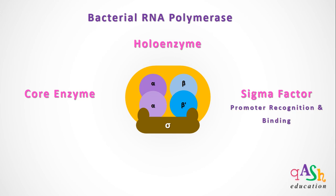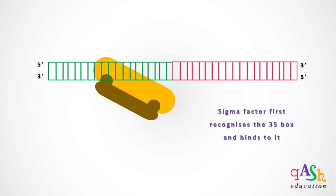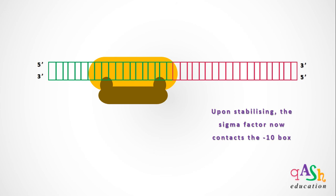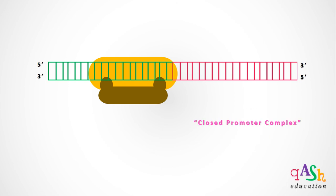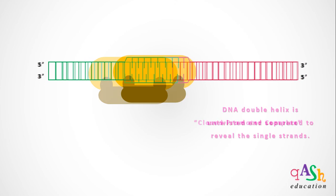The sigma factor is crucial for the recognition of promoter sequences — that is the minus 35 box and the minus 10 box — and for its binding onto them. The process begins with the identification of the minus 35 box by the sigma factor and its subsequent binding to it. After stability at the minus 35 box is attained, the polymerase makes contact with the minus 10 box. Since the promoter region is still locked into the double helical structure, it is called the closed promoter complex.